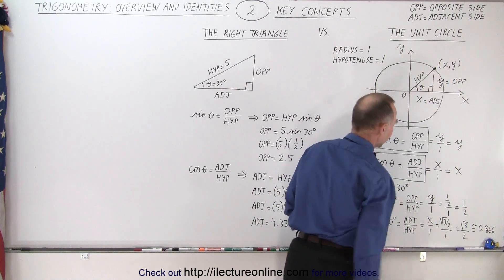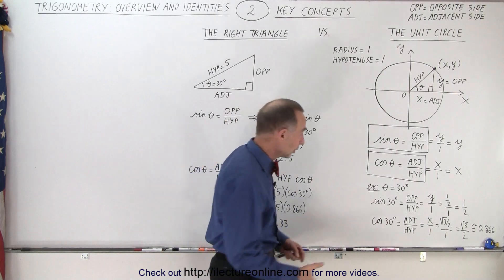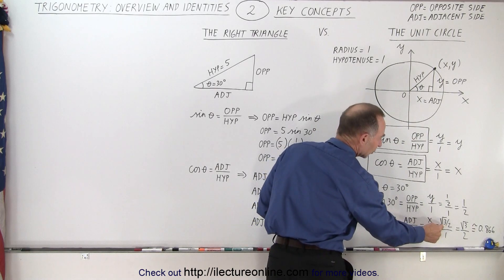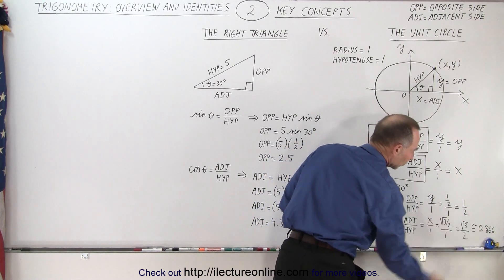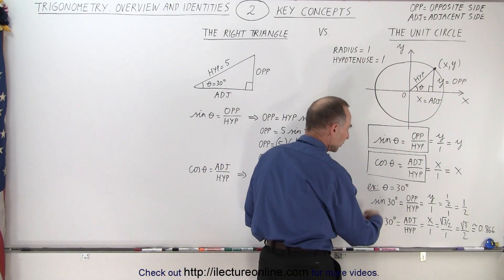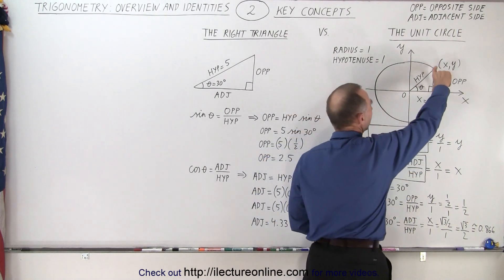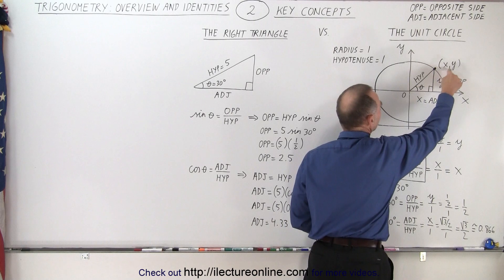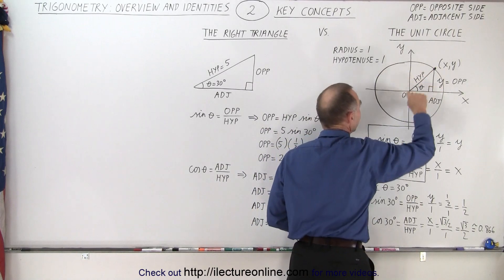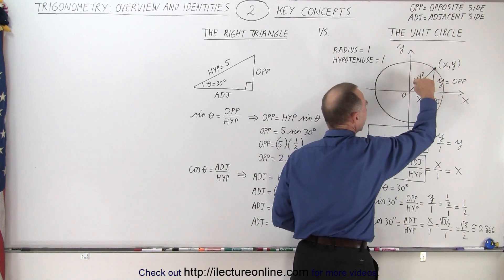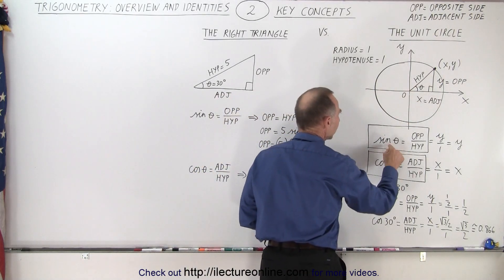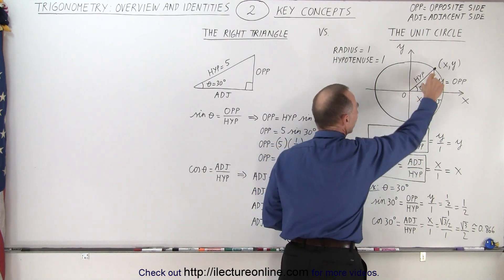So the sine of 30 equals one half, meaning the value for y equals one half. For the cosine of 30 degrees, the length of x turns out to be equal to the square root of 3 over 2, which is approximately 0.866. So when the angle is 30 degrees, we can determine the length of y and the length of x — the x and y coordinates of a point on the unit circle — by using the sine and the cosine.